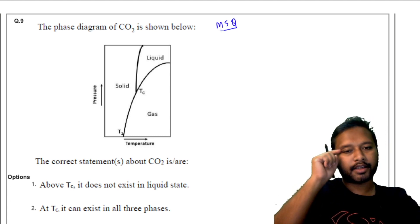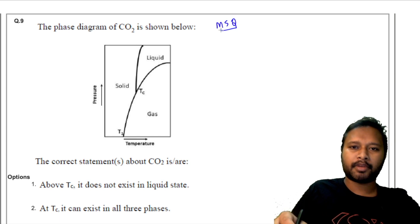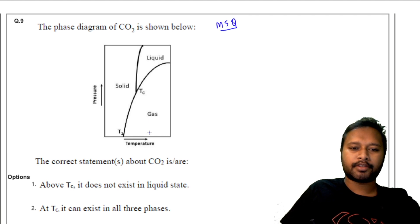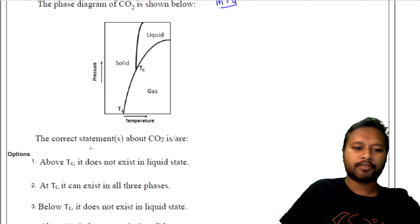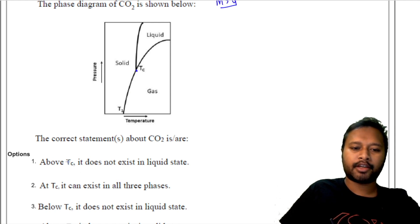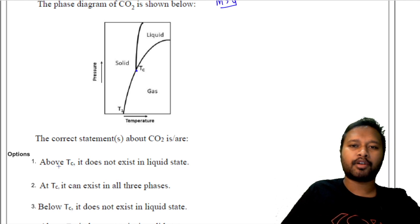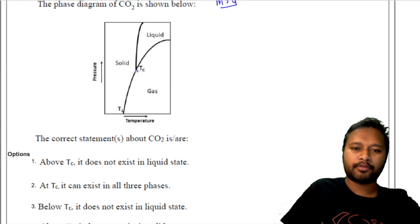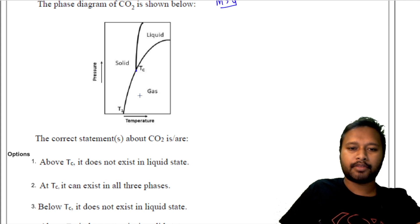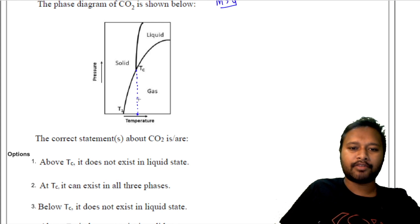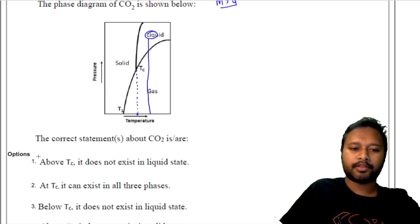The next question is from the phase diagram — again an MSQ. The question shows the phase diagram of CO₂ and asks which statements about CO₂ are correct. Statement A says that above Tc it does not exist in liquid state. Looking at the diagram, above Tc at certain pressures you can see it does exist in liquid state, so that statement is not correct.